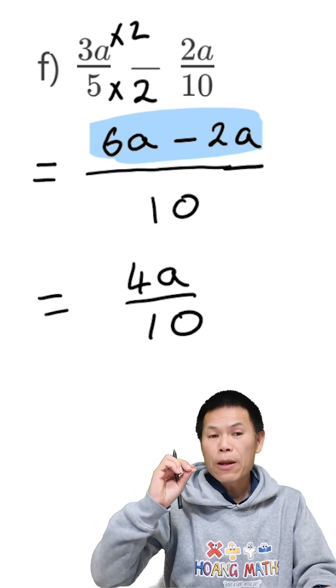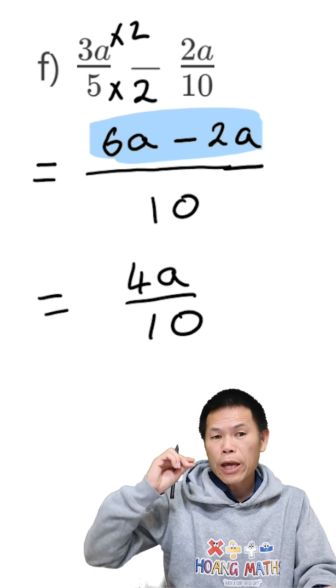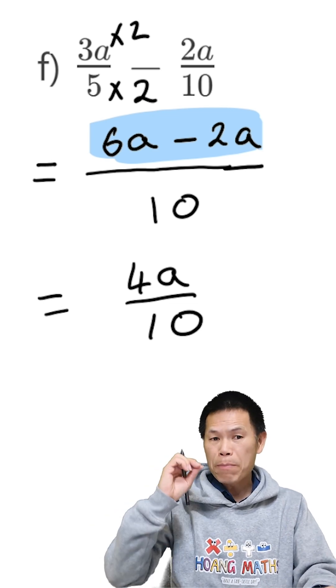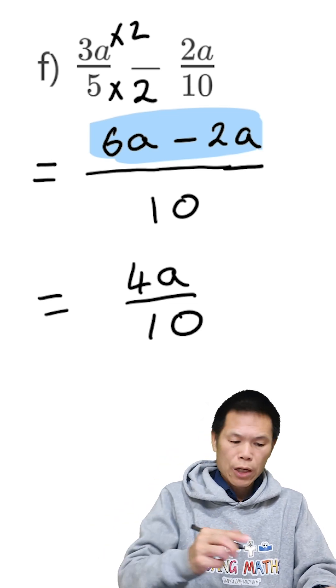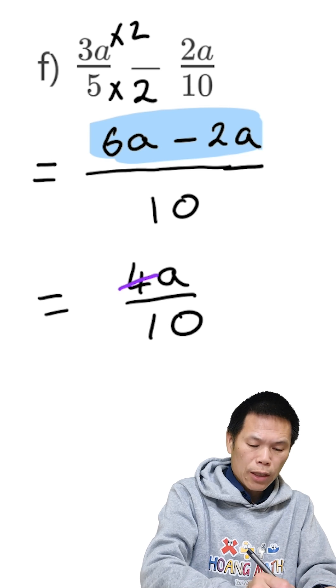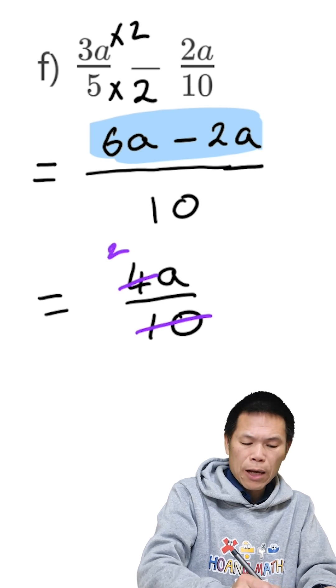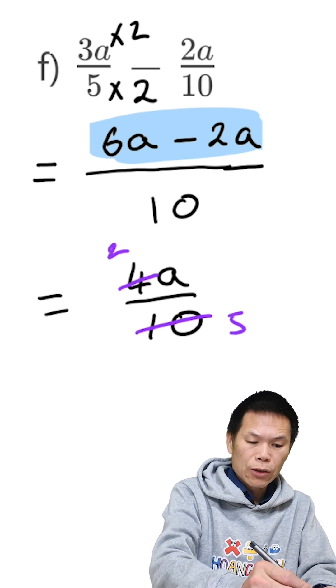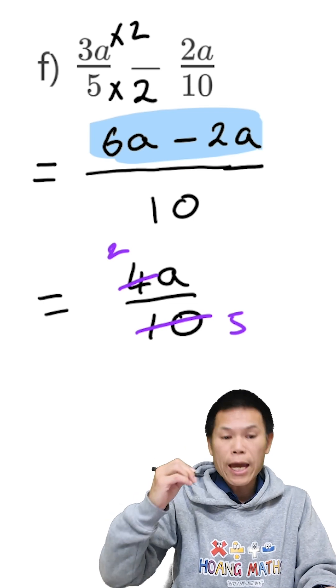But 4 and 10 we can simplify further by dividing both by 2. We divide this by 2, that gives me 2. We divide this by 2, gives me 5. So that is 2a over 5.